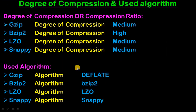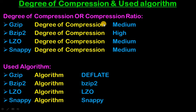Next is the degree of compression, also known as the compression ratio. Gzip degree of compression is medium. Bzip2 degree of compression is high. LZO degree of compression is medium. And Snappy degree of compression is medium. For example, if we have a 100 GB file and after compression we get 65 GB, that is the compression ratio. The best compression ratio among all four is Bzip2.